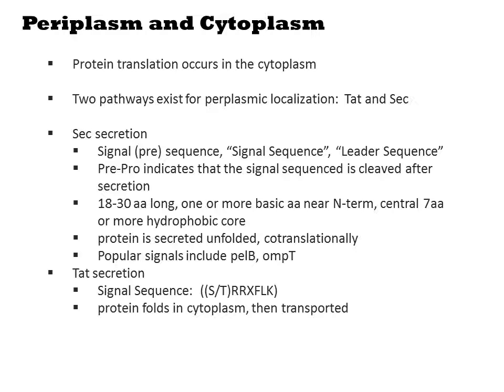The TAT secretion system similarly involves a signal sequence, but it doesn't need to be on the N-terminus. The sequence is: S or T, then RR, anything, FLK. During TAT secretion, the protein first folds in the cytoplasm and is subsequently transported. The system will not transport non-folded proteins, which is a useful trick in various assays.